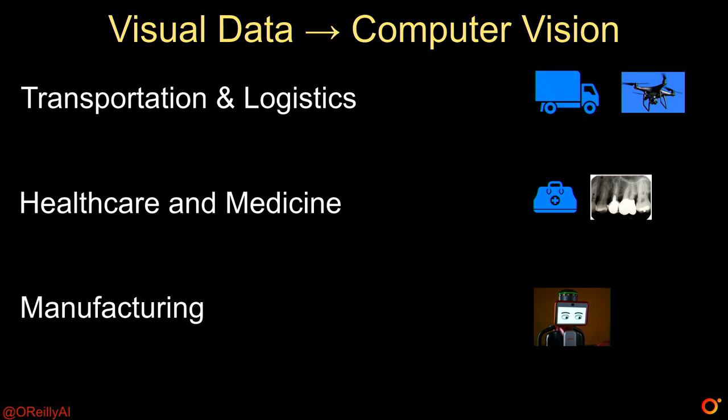Deep learning has proven to be adept at several perception tasks involving images and video. The technology is becoming so prevalent that face recognition and mass surveillance are topics of interest to regulators and policy makers. But computer vision applications go way beyond just face recognition. Manufacturers can check defects by placing specific cameras along their production lines, and we have models capable of detecting even the smallest quirk in a medical scan that can save a patient's life.